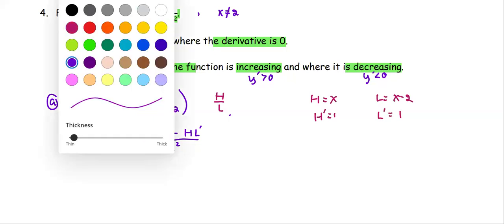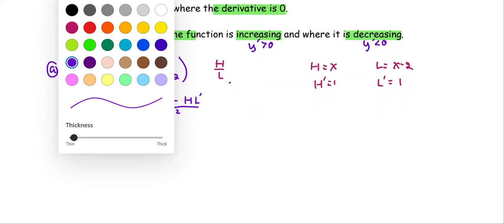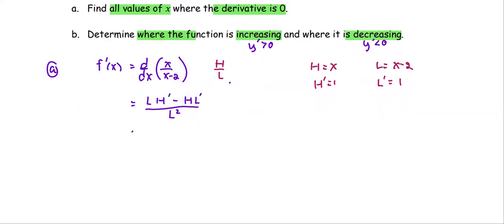We put them back together into the quotient rule. So the low is the quantity (x-2), d(high) is 1, minus the high, which is x, multiplied by d(low), which is 1, all divided by the quantity (x-2) squared, simplified to be -2/(x-2)² as the derivative of the function f(x).